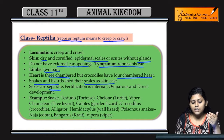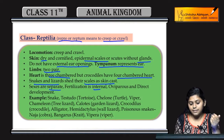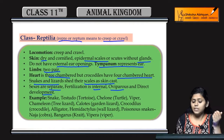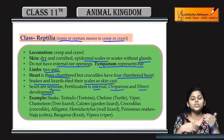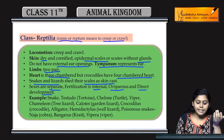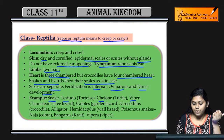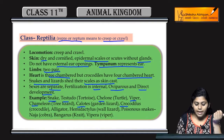Sexes separate hote hain, means yeh dioecious hote hain. Fertilization is internal and they are oviparous, which means they lay eggs. Direct development hota hai, means koi bhi indirect stage ya phir immature stage peechhe mein nahin aati. Examples hain: snake, testudo, chelonia, viper, crocodylus, chameleon, alligator.